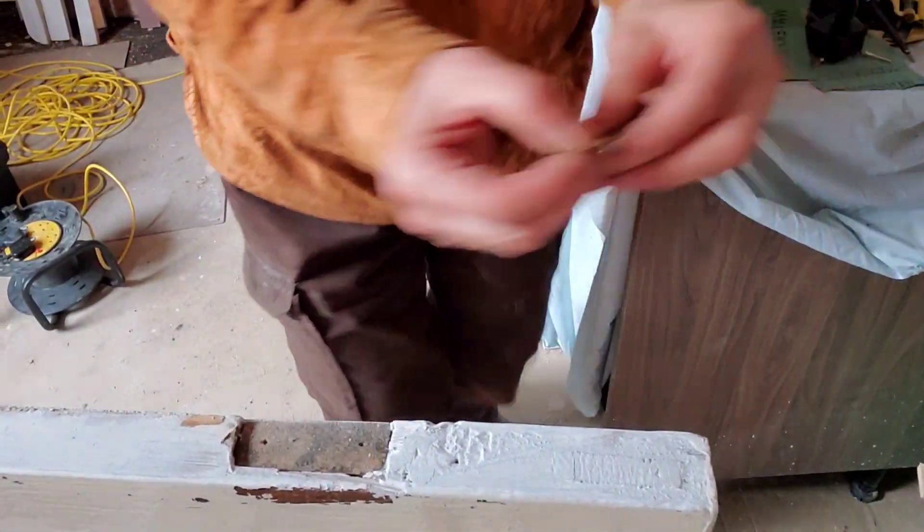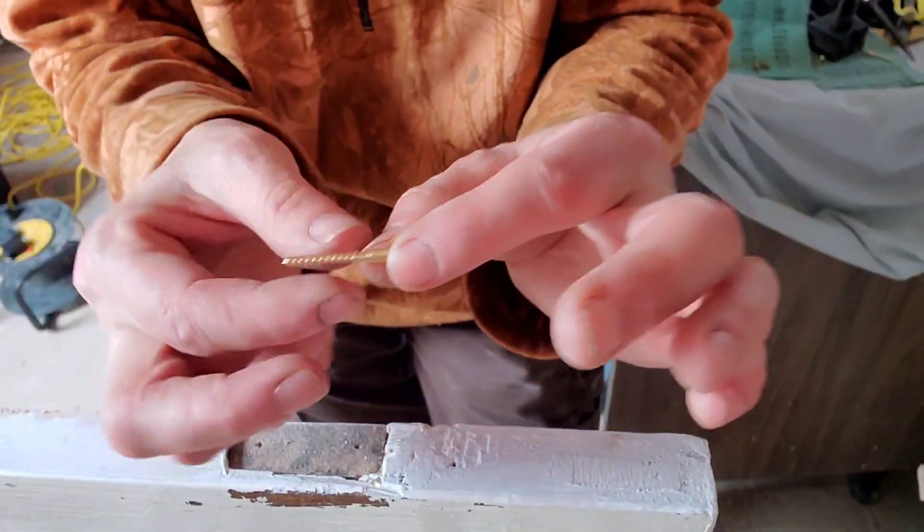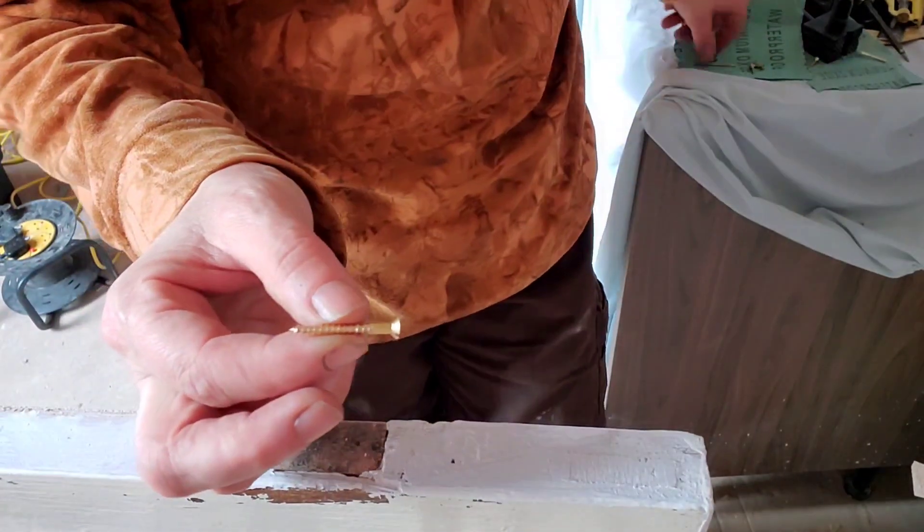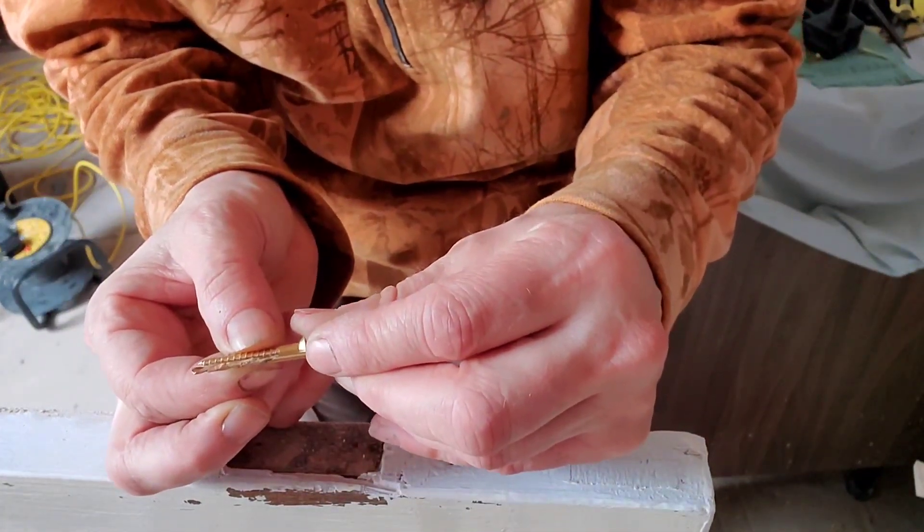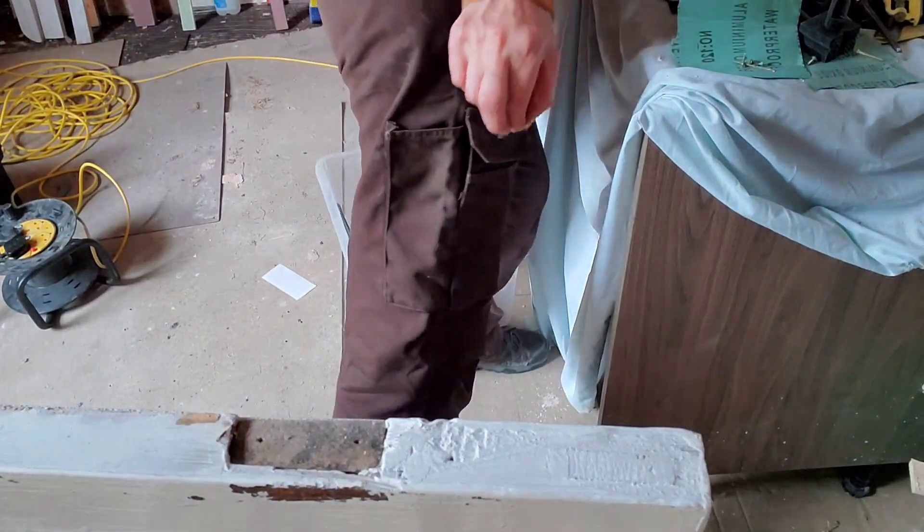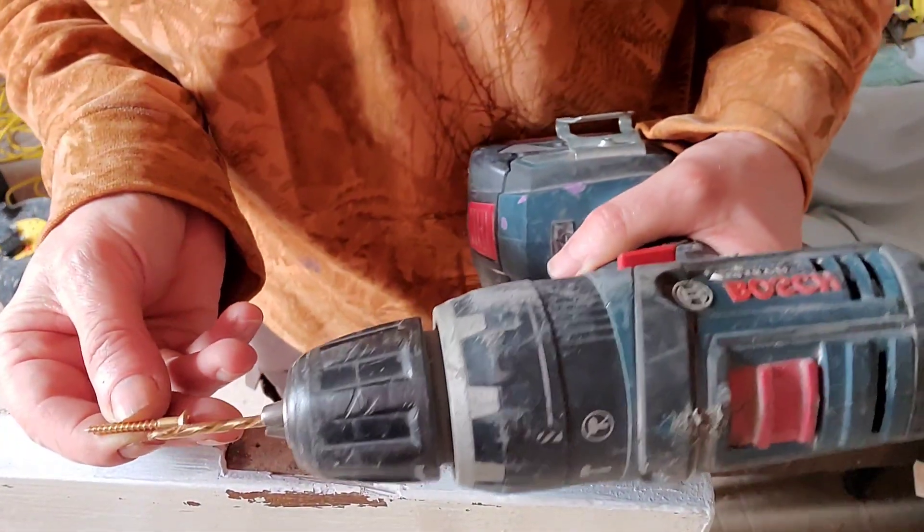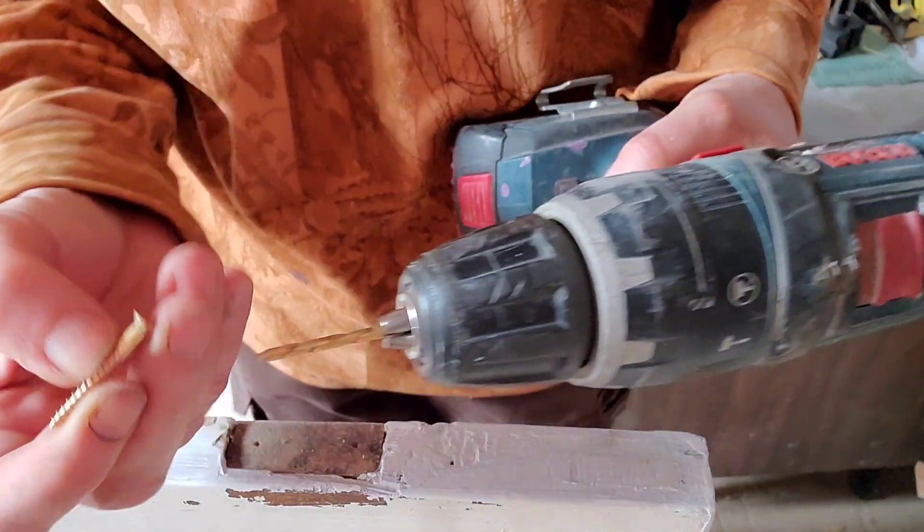Now these are the screws that I ultimately want to use - it's a traditional timber screw. For that I would drill a pilot hole the full length of the screw, and then use a bigger drill bit to pilot just that far in for the fat part of the screw.